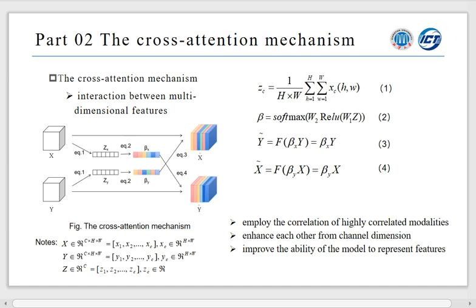Then use softmax function in equation 2 to get the attention values beta X and beta Y, where the W1, W2 means trainable parameters. Finally, as the figure is shown, we use the attention values to cross-multiply with the original features according to equation 3 and equation 4 and get the enhanced features. In this way, we can explore the correlation of highly correlated modalities to enhance each other from the channel dimension and improve the ability of the model to represent features.